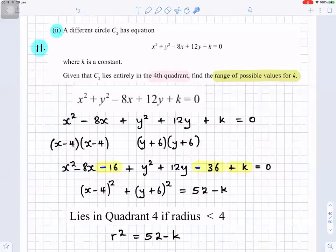Part B says a different circle c2 has equation x squared plus y squared minus 8x plus 12y plus k is equal to 0, where k is a constant. Given that c2 lies entirely in the fourth quadrant, find a range of possible values for k.